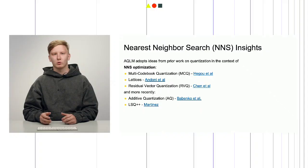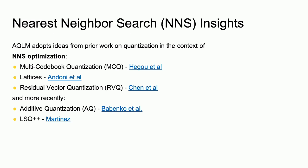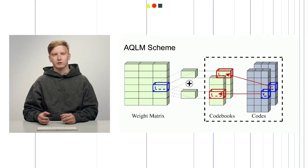AQLM adopts ideas from prior work on quantization in the context of nearest-neighbor search and optimization. Together with some other contemporary LLM quantization techniques, AQLM uses vector quantization, meaning that a multidimensional grid is used as opposed to one-dimensional grids of simpler quantization methods. The quantization grid itself is dynamically optimized to minimize the quantization error. Specifically, AQLM builds upon the method of additive quantization proposed by Babenko and co-authors in their additive quantization for extreme vector compression paper. A linear layer matrix is represented as a two-dimensional concatenation of vectors, each of which is represented as a sum of a certain number of specific learnable vectors from codebooks, selected by corresponding codes.